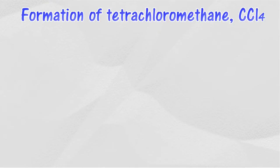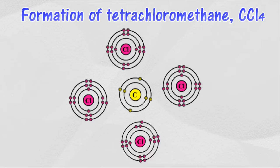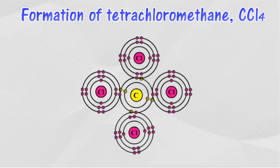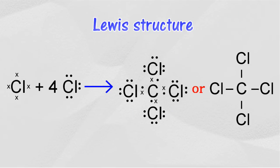Single covalent bonds can also be formed between different nonmetal atoms, for example the tetrachloromethane molecule. Each chlorine atom has an electron arrangement of 2.8.7, while a carbon atom has an electron arrangement of 2.4. The outermost shell of a chlorine atom and a carbon atom lack one electron and four electrons respectively to achieve a stable electron arrangement. One carbon atom shares electrons with four chlorine atoms. Each carbon atom contributes four valence electrons while each chlorine atom contributes one valence electron for sharing. Each atom in the tetrachloromethane molecule achieves a stable electron arrangement, and four single covalent bonds are formed. The Lewis structure is shown as follows.